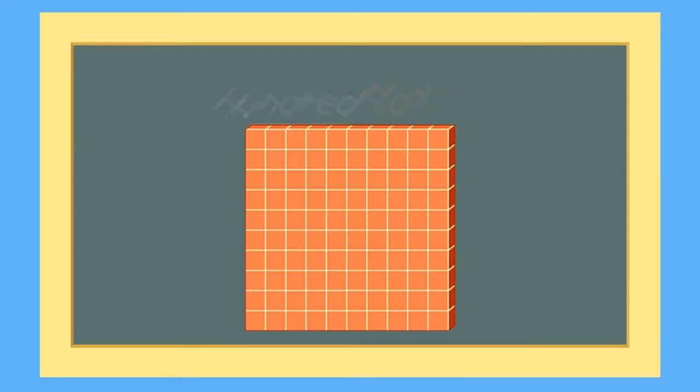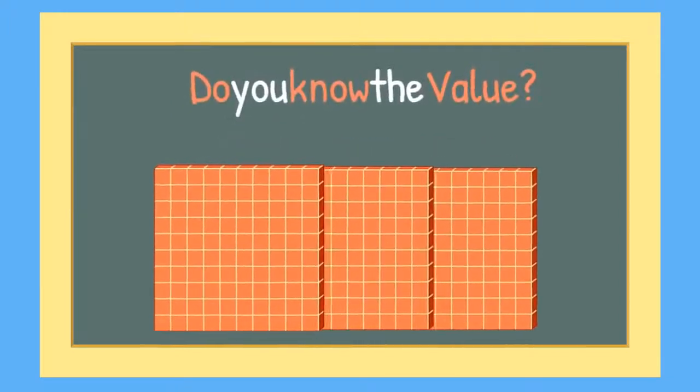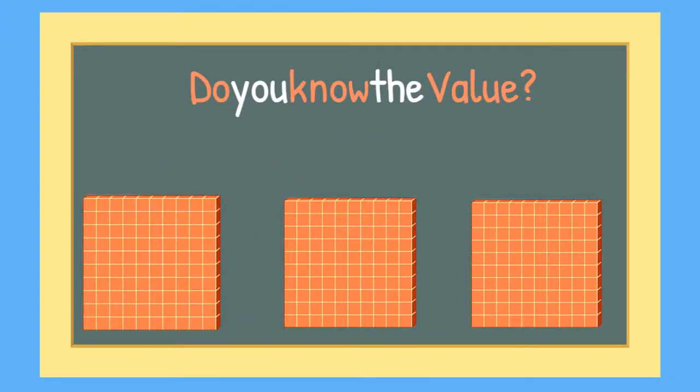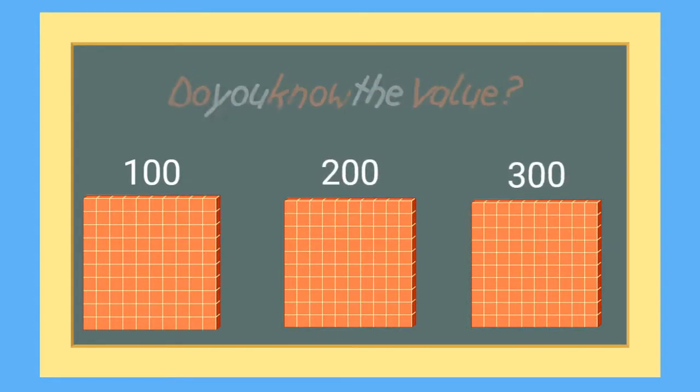In our number 345, there are 3 hundreds flats. Do you know the value of 3 hundreds flats? 100, 200, 300. 3 flats equals 300.